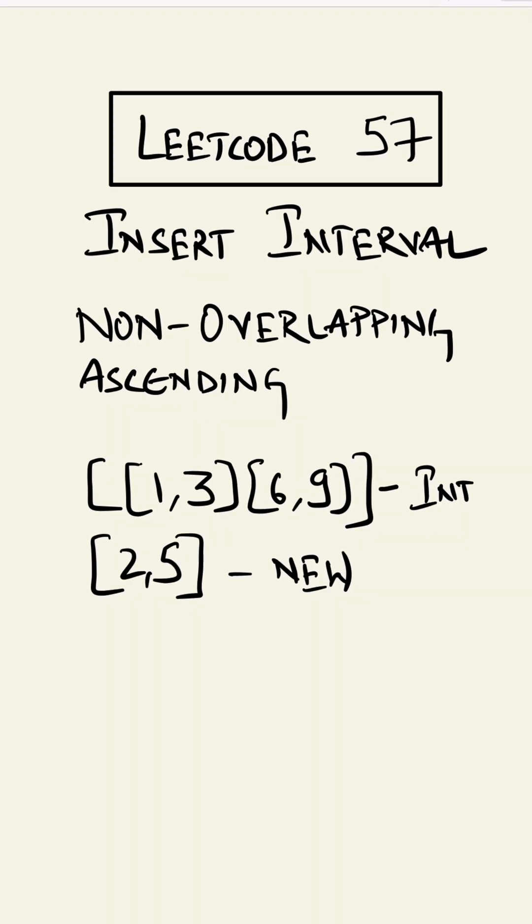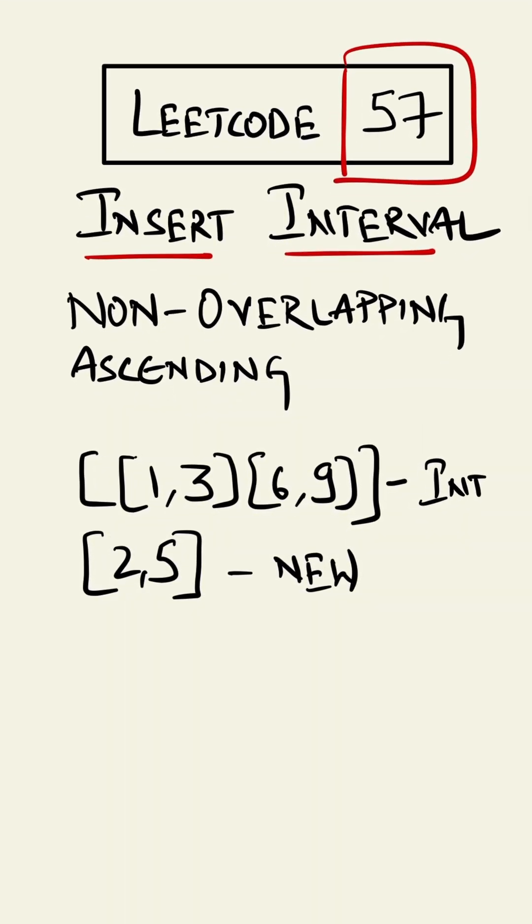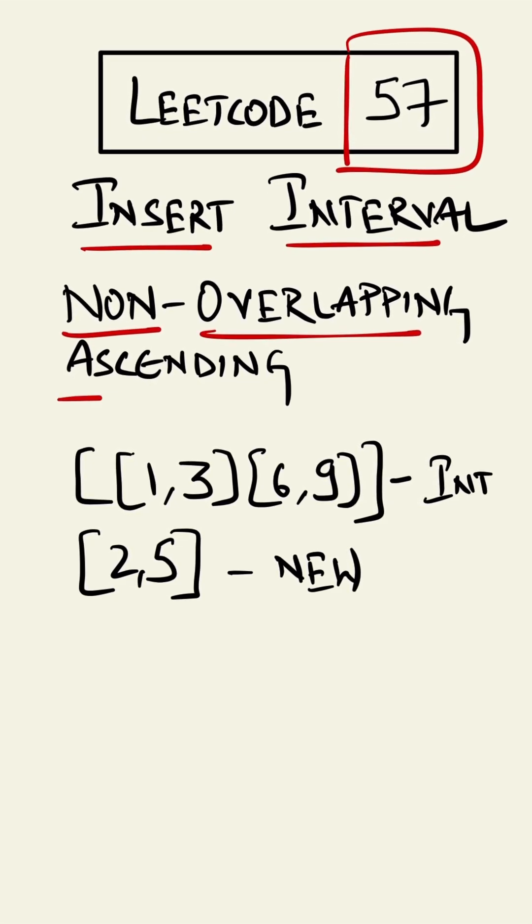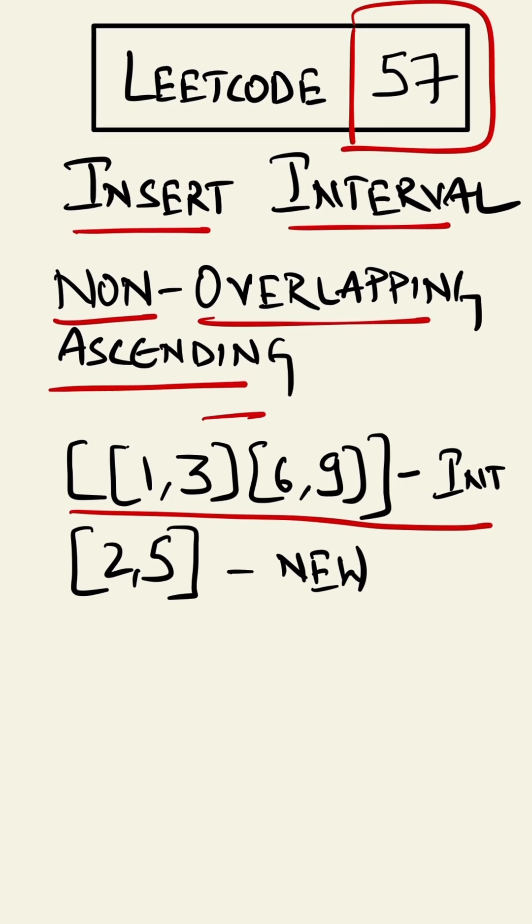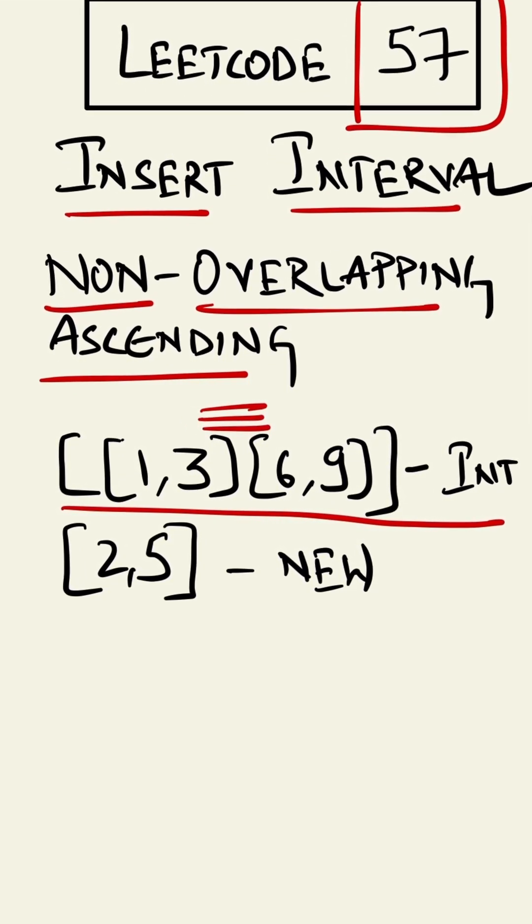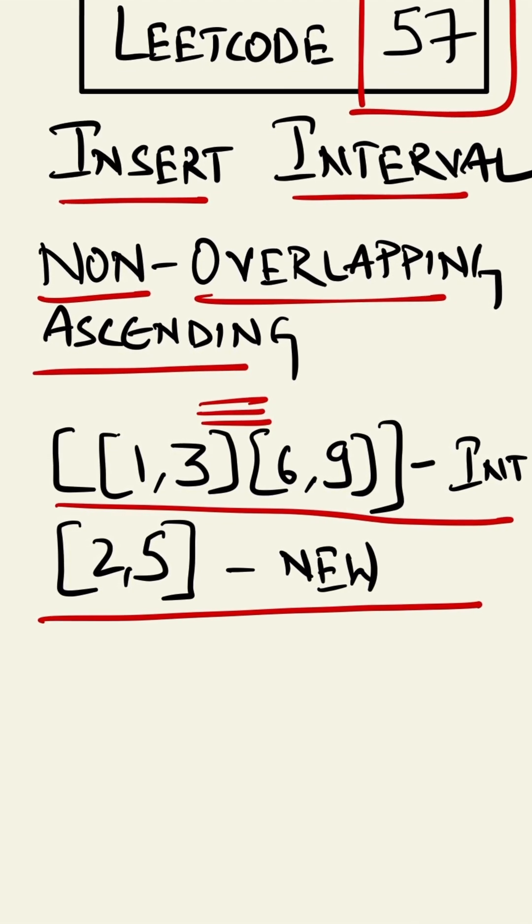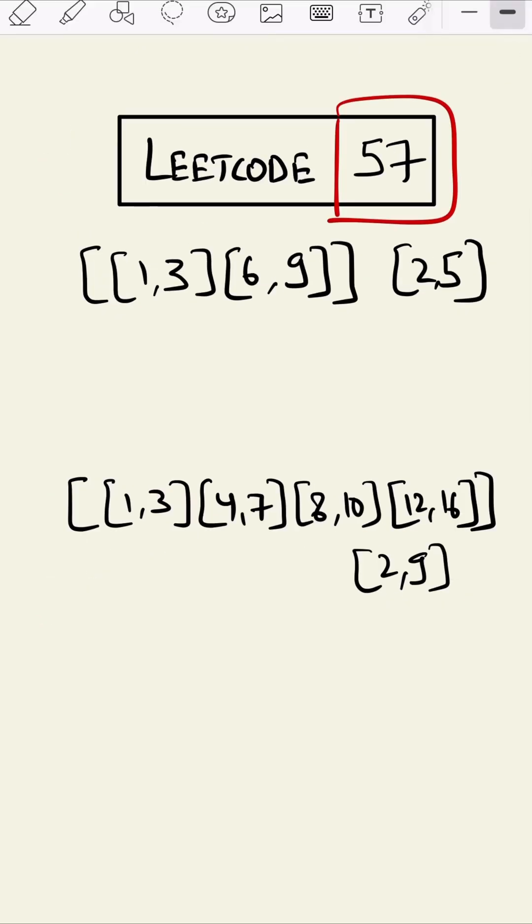When interval merging gets out of hand, this is LeetCode 57, insert interval. In this question we are given non-overlapping ascending intervals such as this. As we can see these values are non-overlapping and in ascending order. We have to insert a new interval such that it remains a non-overlapping ascending interval.